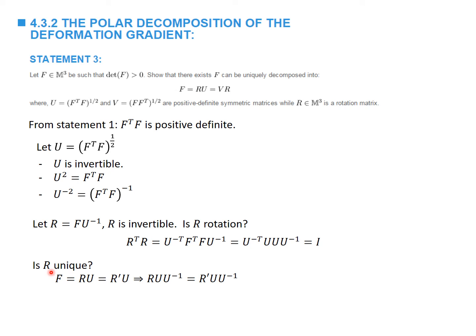R is unique because of the uniqueness of U and the invertibility of U. If we assume another rotation matrix R′ satisfies R′U = F = RU, then multiplying both sides on the right by U⁻¹ gives R = R′, so R is unique. The same proof applies to the left polar decomposition F = VR and is left to the student as an exercise.